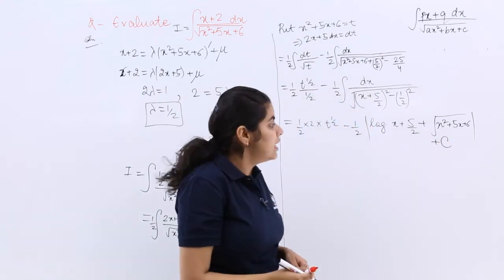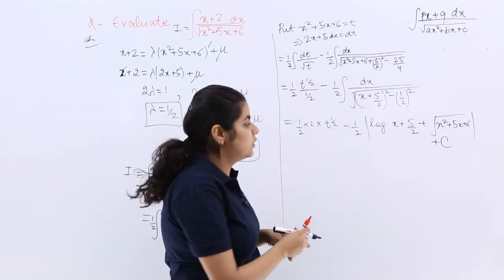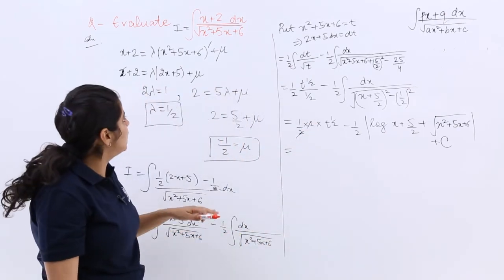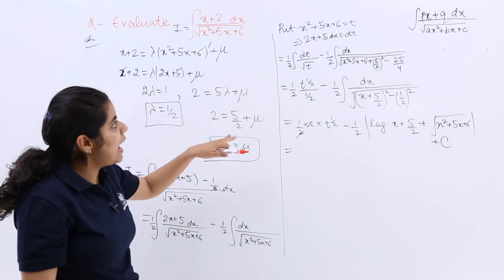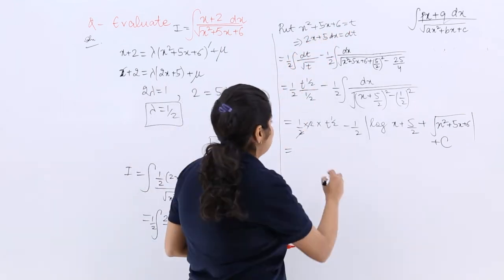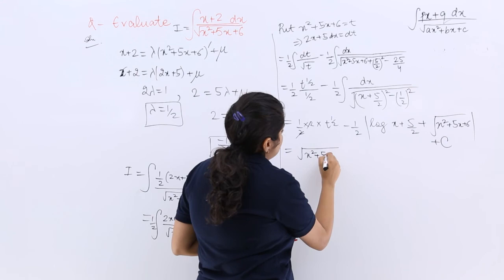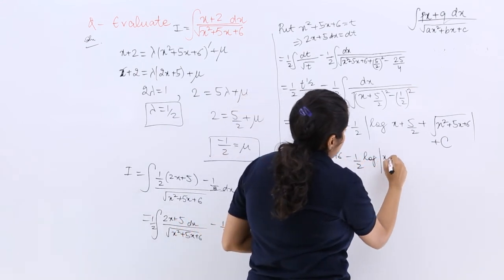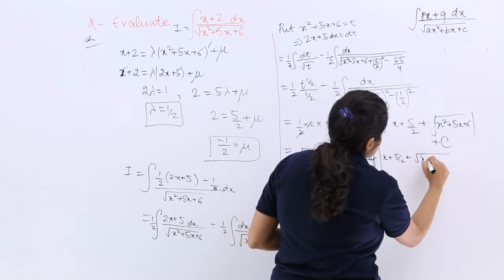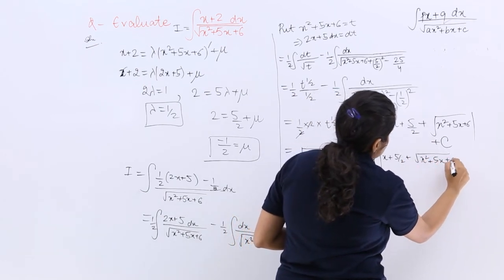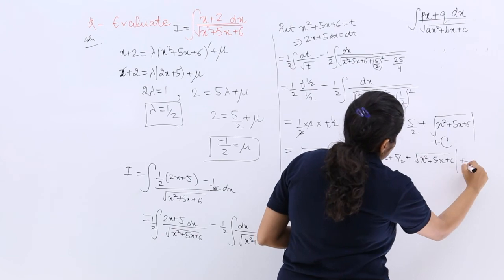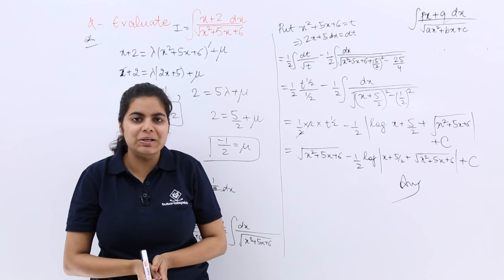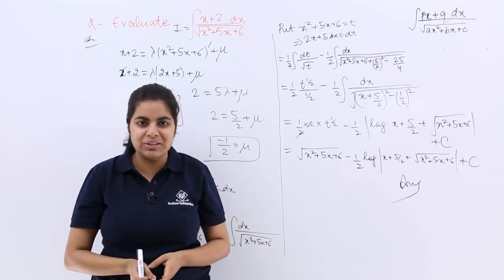Substituting back t = x² + 5x + 6, the final answer is: √(x² + 5x + 6) − (1/2)log|x + 5/2 + √(x² + 5x + 6)| + C. This type of format — integrating a linear expression over a square root of a quadratic — can now be solved using this lambda-mu method.